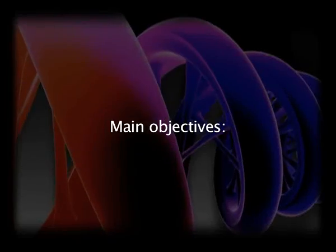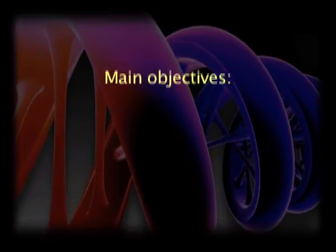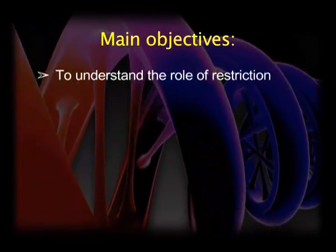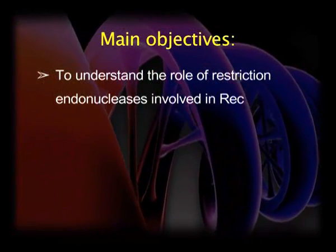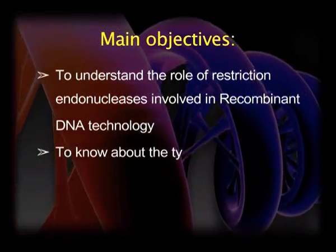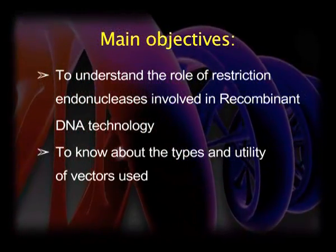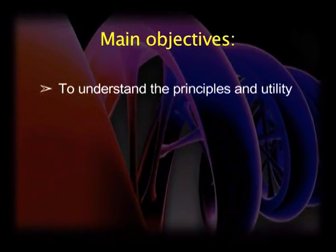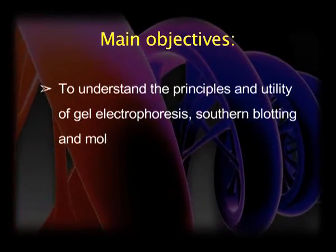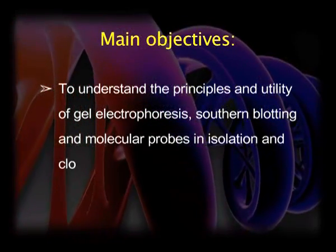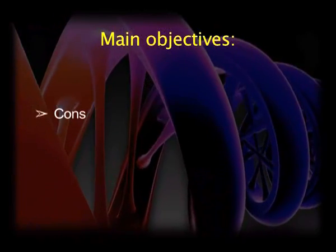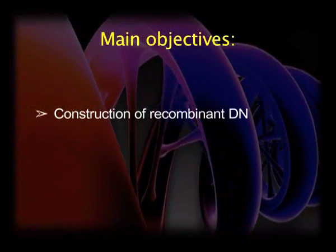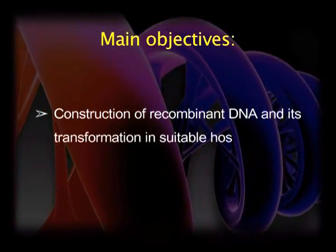Welcome students. Today's topic is tools and techniques of recombinant DNA technology. The main objectives of this lecture are to understand the role of restriction endonucleases involved in recombinant DNA technology, to know about the types and utility of vectors used in recombinant DNA technology, to understand the principles and utility of gel electrophoresis, southern blotting, and molecular probes in isolation and cloning of gene of interest, and lastly, construction of recombinant DNA and its transformation in suitable host cells for cloning of gene of interest.